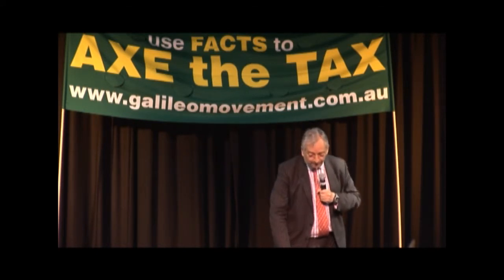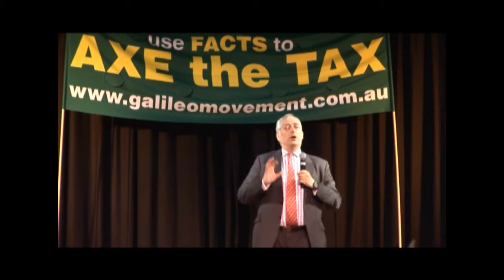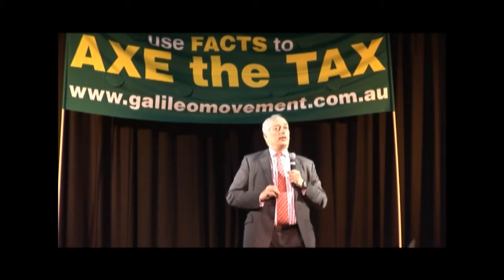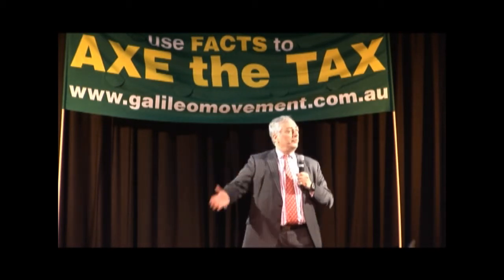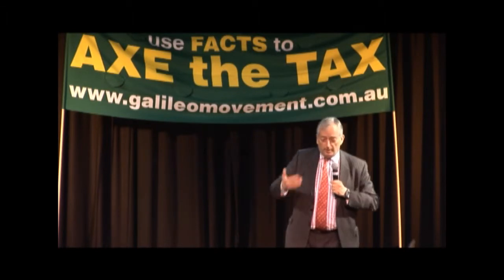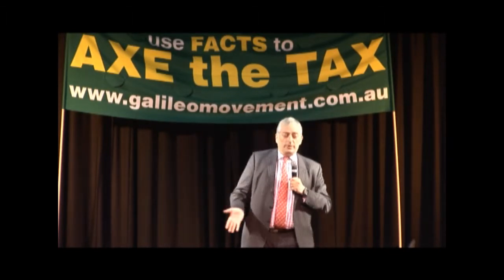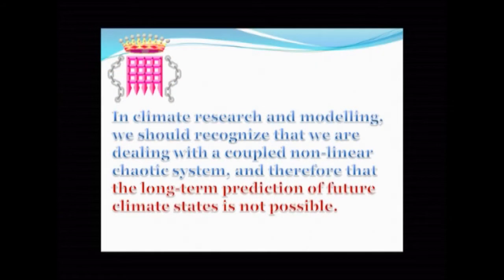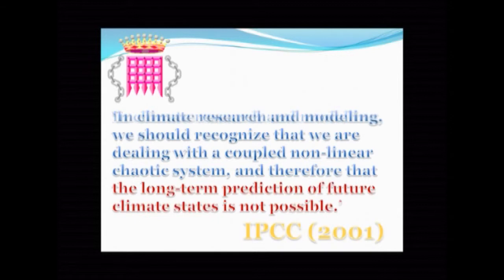To conclude on the business of whether computers can model the climate for 100 years ahead, here is my summary: the long-term prediction of future climate states by using computer models is not possible. And I know that must be true because it was actually said by the Intergovernmental Panel on Climate Change in 2001.